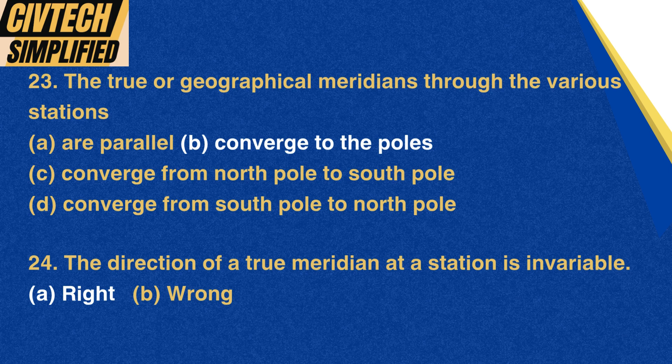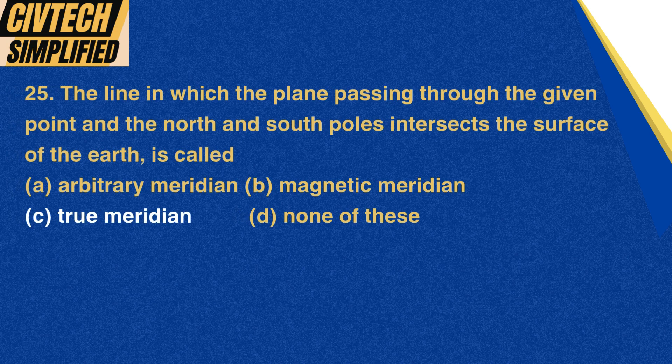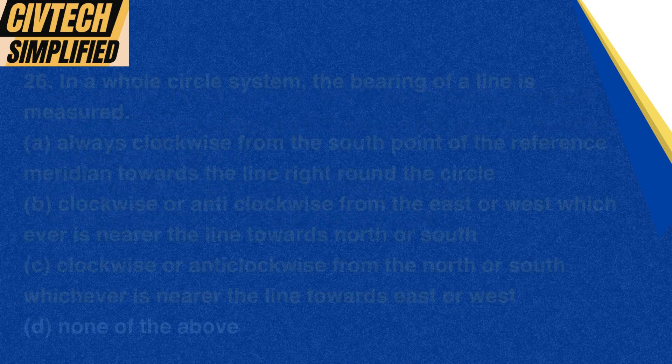Question 24: The direction of a true meridian at a station is invariable. A. Right, B. Wrong. Correct option: A. Right. Question 25: The line in which the plane passing through the given point and the north and south poles intersects the surface of the earth is called: A. Arbitrary meridian, B. Magnetic meridian, C. True meridian, D. None of these. Correct option: C. True meridian.